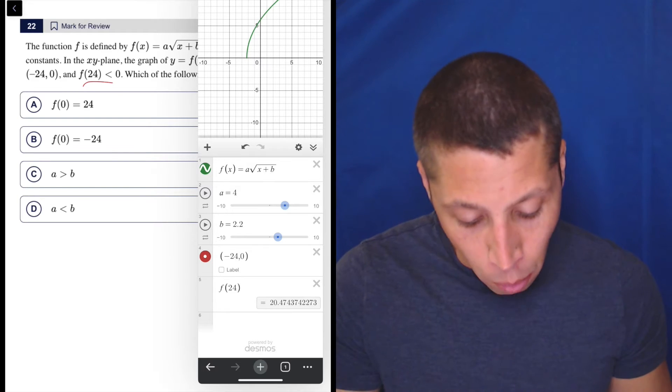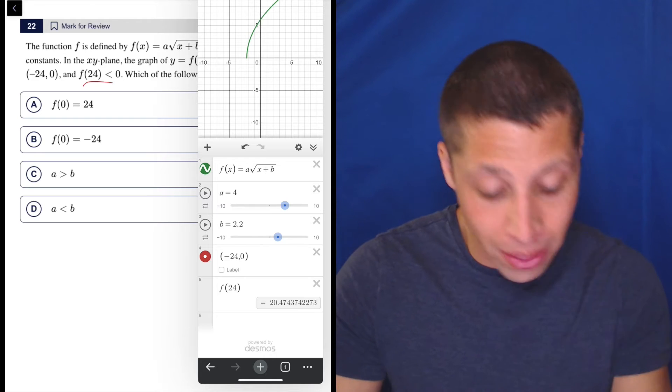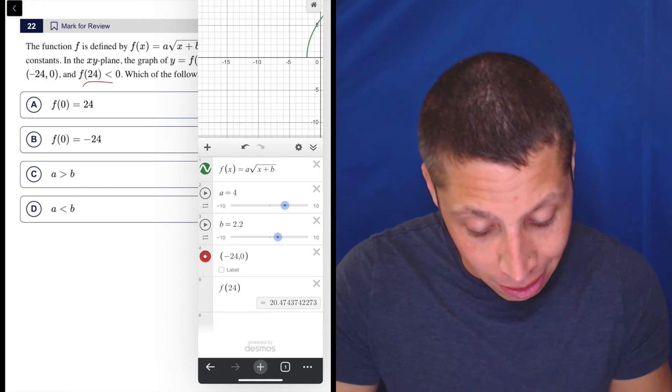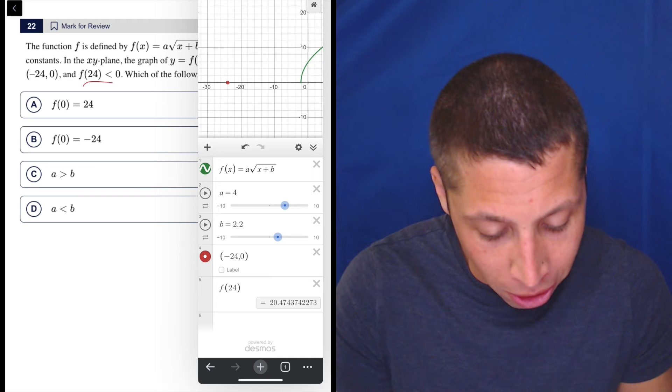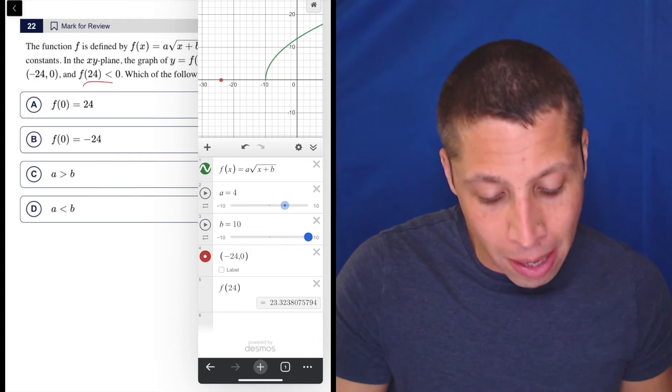So right now it's not. But we also have to make sure negative 24 comma zero, that point, is on the graph. And that's not even on my screen right now. That's going to be all the way out here. And so notice our graph has nothing to do with that. So we could play with these values as we make B bigger. We can see we're getting closer to that red point.